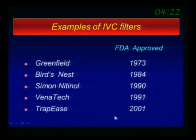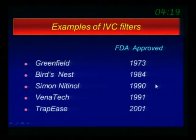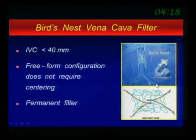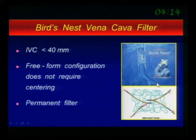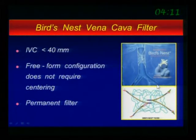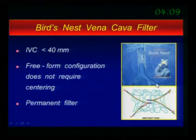There are a bunch of filters on the market — I won't spend too much time on those. The bird's nest is for the very large vena cava; people forget about that. When you do a venogram you have to measure the vena cava, otherwise the filter will float — or if it doesn't float right away, it will float a couple of months later.